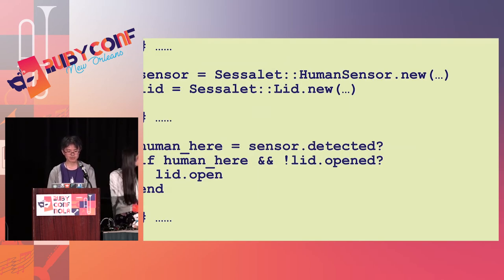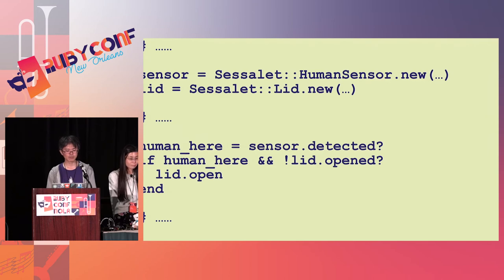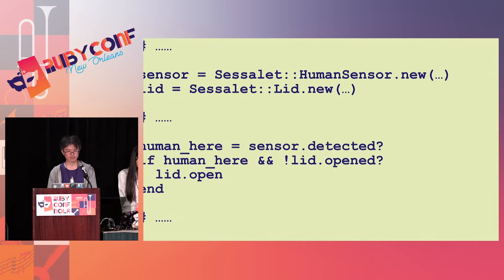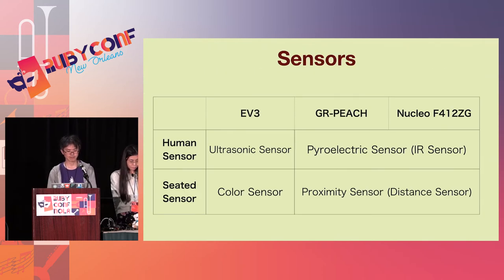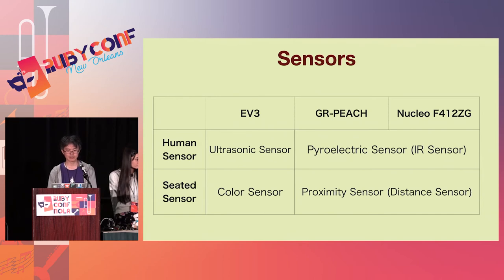Let's see how to use the human sensor class and lid class. First, we make a human sensor object and a lid object. The arguments of constructors differ per board. If the human sensor finds something and the lid is not open, open the lid. I will introduce the hardware that Cesaret uses.